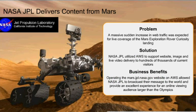Here's a bit more detail about the NASA Jet Propulsion Laboratory website, serving content from Mars using CloudFront locations. The problem they were really trying to solve was the massive sudden increase in web traffic. They wanted a way to scale the website to handle that traffic, and utilized a variety of AWS services including Amazon CloudFront to deliver images and videos to hundreds of thousands of visitors to the site.